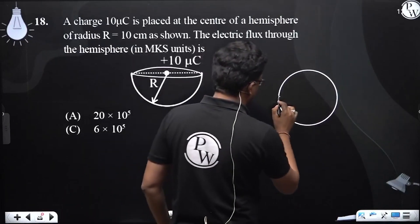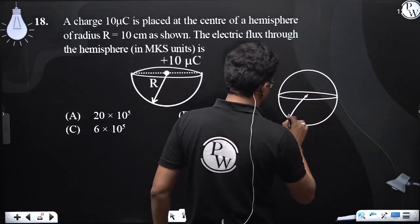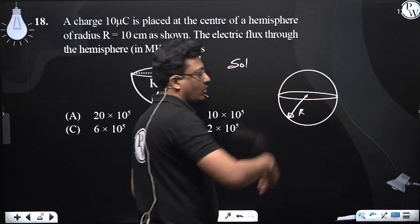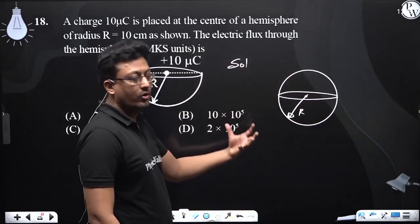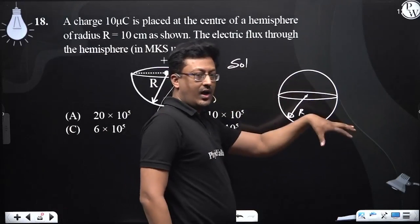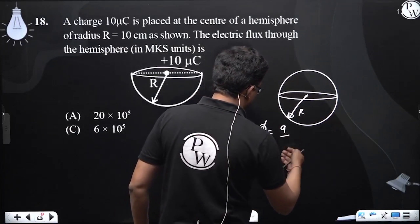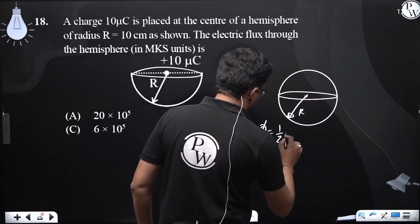What we will do is take a hemisphere with radius R. When we close the hemisphere at its surface, the flux through the hemisphere will be half of the total flux, which equals 1 by 2 times Q enclosed by epsilon naught.